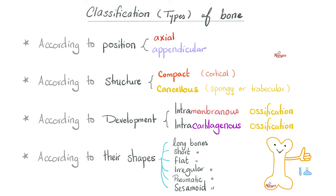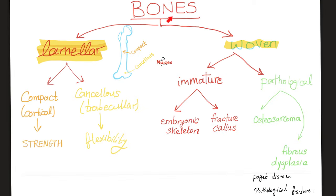From the anatomy playlist, bones are classified by position into axial (midline) or appendicular, and by structure into compact (cortical) or cancellous (spongy/trabecular). Bones can also be classified as lamellar bone — usually normal — versus woven bone — usually abnormal or immature. Lamellar bone includes compact cortical and cancellous trabecular bone.